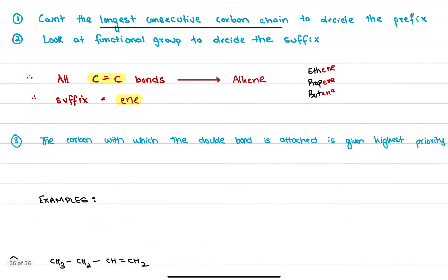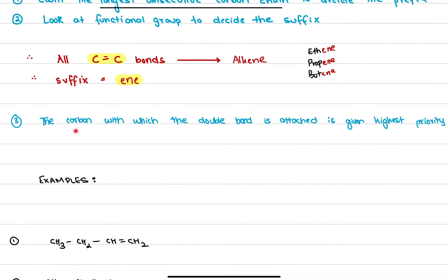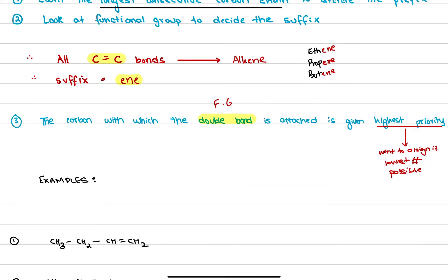The third rule needed for alkene nomenclature is that the carbon to which the double bond is attached is given the highest priority. As we go along, in haloalkanes or alcohols this will be replaced by the functional group, such as the hydroxyl group or halides like fluorine, chlorine, or bromine. For now, we treat the double bond as the functional group. The carbon with the double bond gets the highest priority, meaning we assign it the lowest possible number.